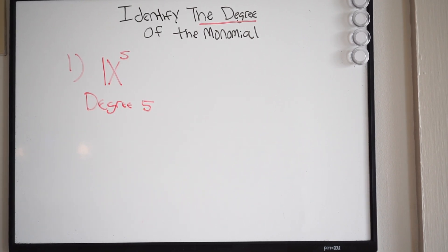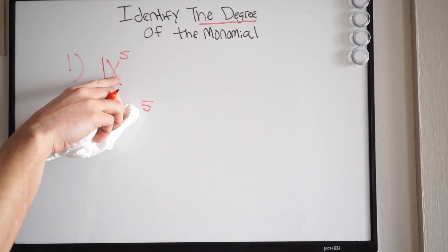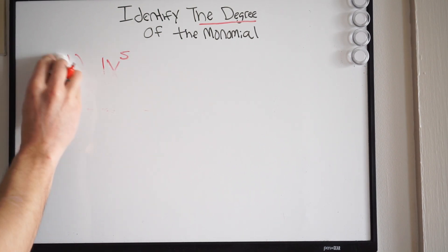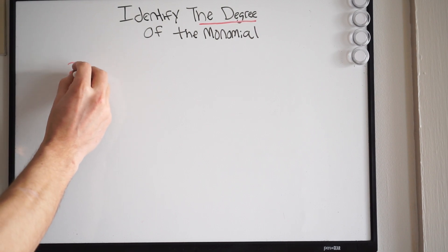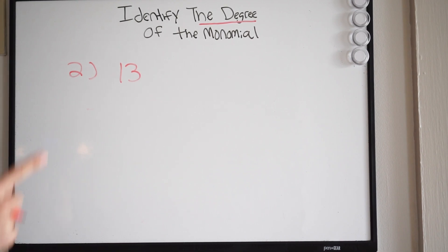So, simple as that. Let's try another one. Now, remember, identify the degree of the monomial. We're only looking at the degree, okay, of the variable. That's it. So for example, if I gave you this, and let's just say 13.